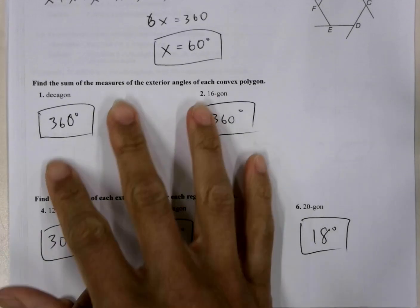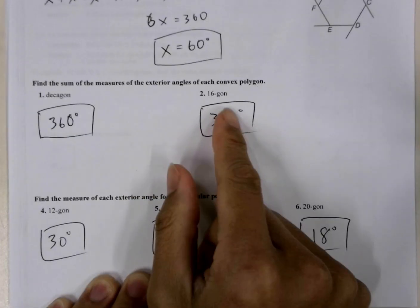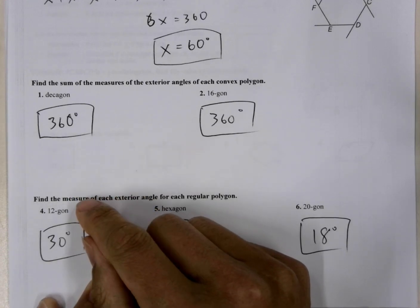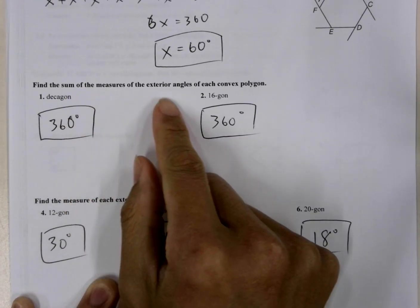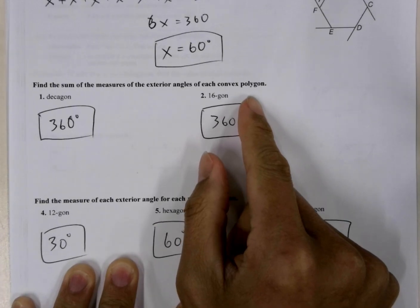So here's the answers to the problems. The first set is kind of a trick problem. It's find the sum of the measure of the exterior angles of each convex polygon.